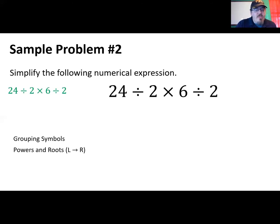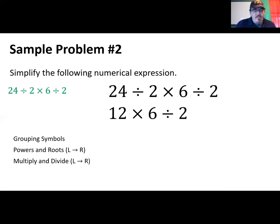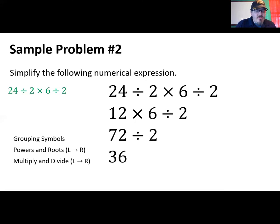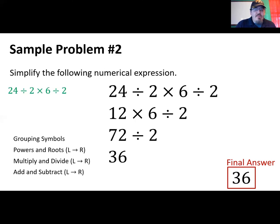In this problem, 24 divided by 2 shows up first, giving us 12. Next is 12 times 6, which is 72. Then 72 divided by 2 is 36. We're down to a single number, but for good measure we check addition and subtraction — there isn't any. So our final answer is 36.